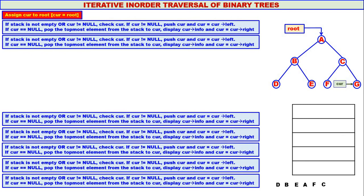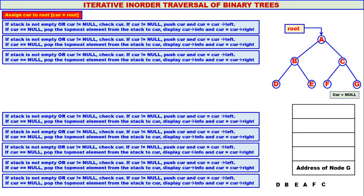Again, if stack is not empty or curry not equal to null — stack is empty but curry is not equal to null. We check curry. Since curry is not equal to null, push address of node G onto the stack. Curry moves to curry's left — there is no left child for G, so curry becomes null. Stack is not empty but curry is null — pop address of node G to curry. Display curry info — G is displayed. Curry moves to curry's right. There is no right child for G, so curry becomes null.